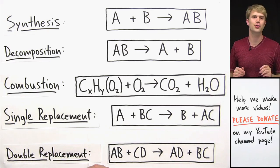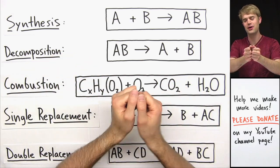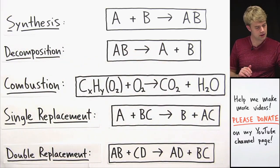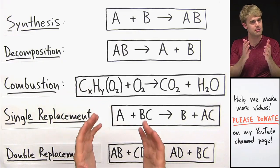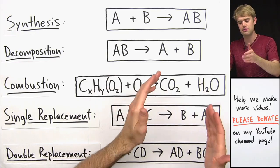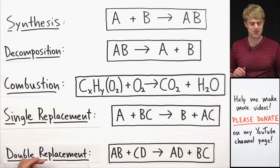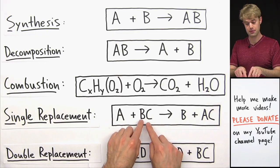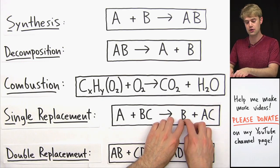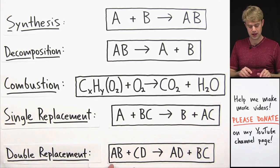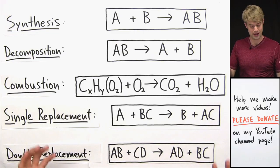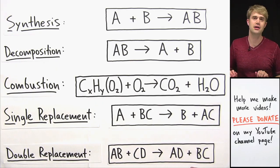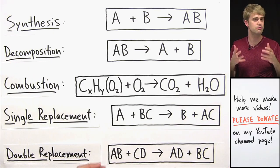So those are the five major types of chemical reactions. In synthesis, simple things combine together to make something more complex. In decomposition, something complex breaks apart into simpler pieces. In combustion, a compound containing carbon, hydrogen, and sometimes oxygen comes together with oxygen gas to make carbon dioxide and water. Single replacement and double replacement are our two dance floor reactions. In single replacement, an element by itself kicks another element out of a compound and takes its place. In double replacement, it's like two dancing couples where the partners just trade places. In the next video, we'll do some practice problems so you can look at different reactions and figure out what type they are.